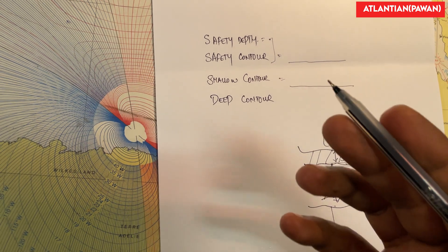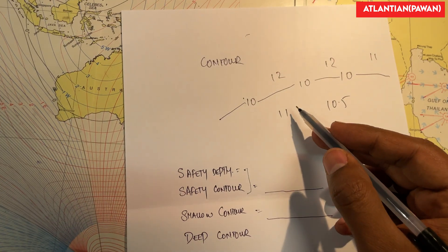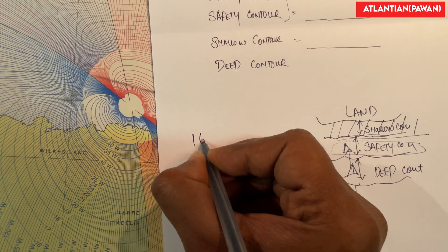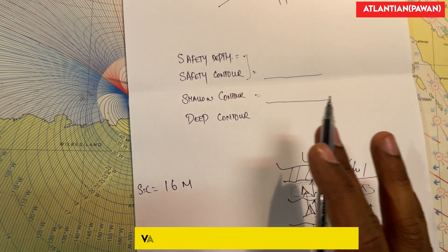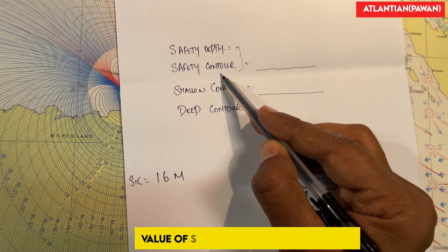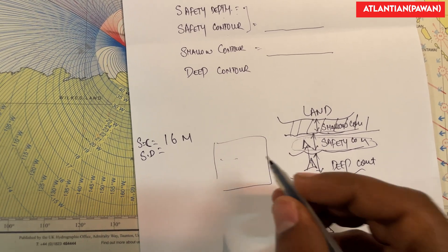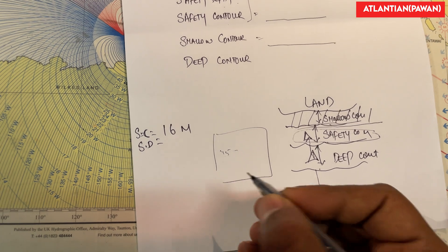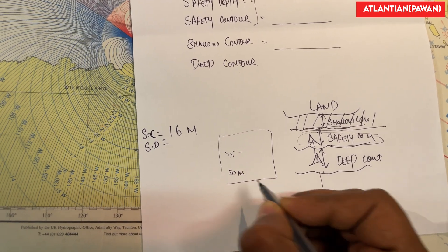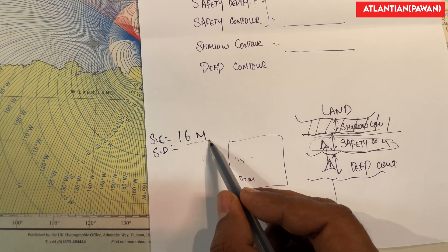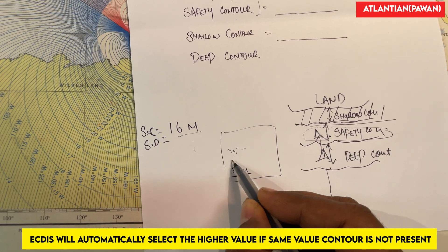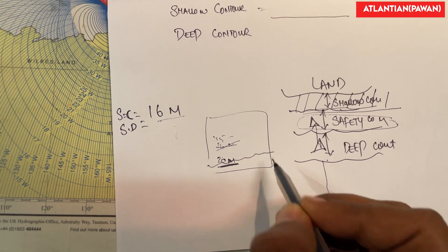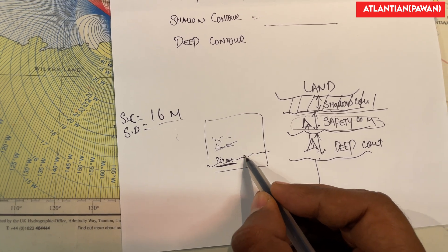Now, what is the difference between safety depth and safety contour? A contour is a line which joins places which have equal depth. Let's say I get a contour of 16 meters. Safety depth and safety contour calculation is the same, so whatever value we get for safety depth, the same value will be there for safety contour on my ECDIS. It is not necessary that the present chart has a 16-meter contour — maybe I have a 15-meter contour and then a 20-meter contour. So automatically, once I set safety contour to 16 meters, my ECDIS will select the next higher contour, because if the 16-meter contour is not available, the ECDIS is designed to automatically select the next higher contour.